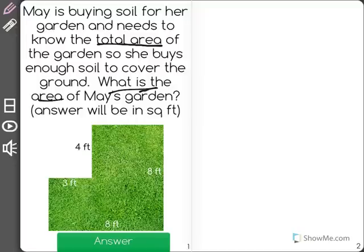Now, we can see that the length of May's garden is 8 feet, and the width is also 8 feet. But she has this section missing over here that is not part of that.